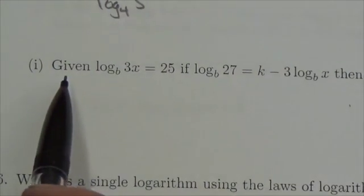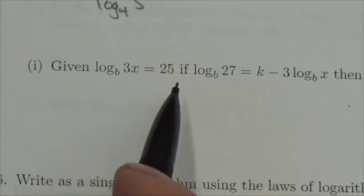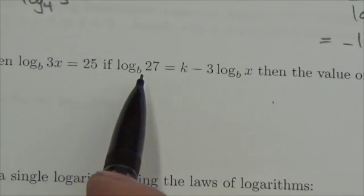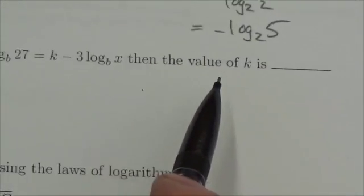Hi, everyone. In this question I'm told that given that the log base b of 3x is equal to 25, if the log base b of 27 is equal to k minus 3 times the log base b of x, what's the value of k?